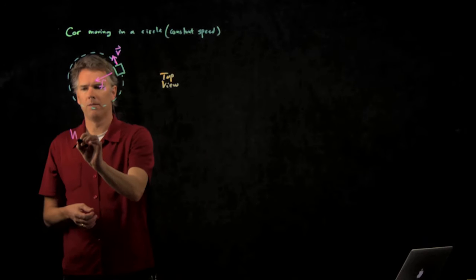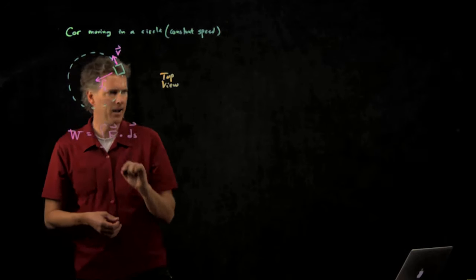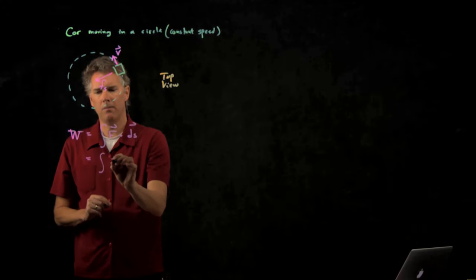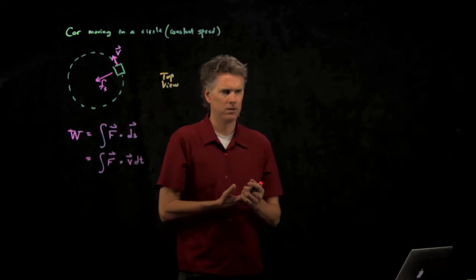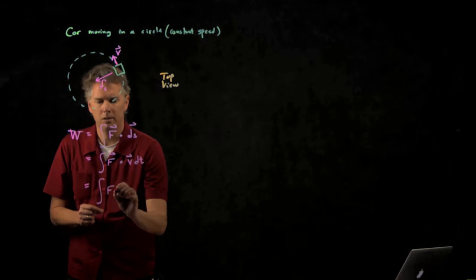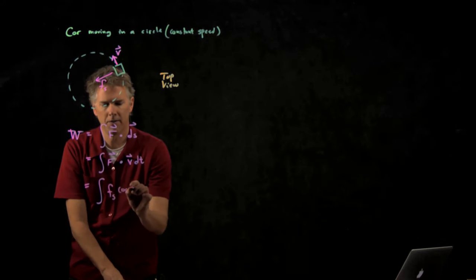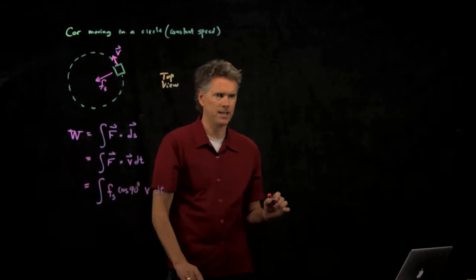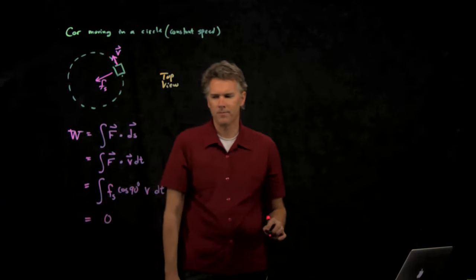So let's think about the work now. Work is the integral of F dotted with whatever path you have. But we know what path it's taking at that instant of time, it's just the velocity times that little chunk of time. And therefore, this first part becomes F sub S. We have the cosine of the angle between them, which we said was 90. We have the velocity V, and we have the DT, but the cosine of 90 is zero.